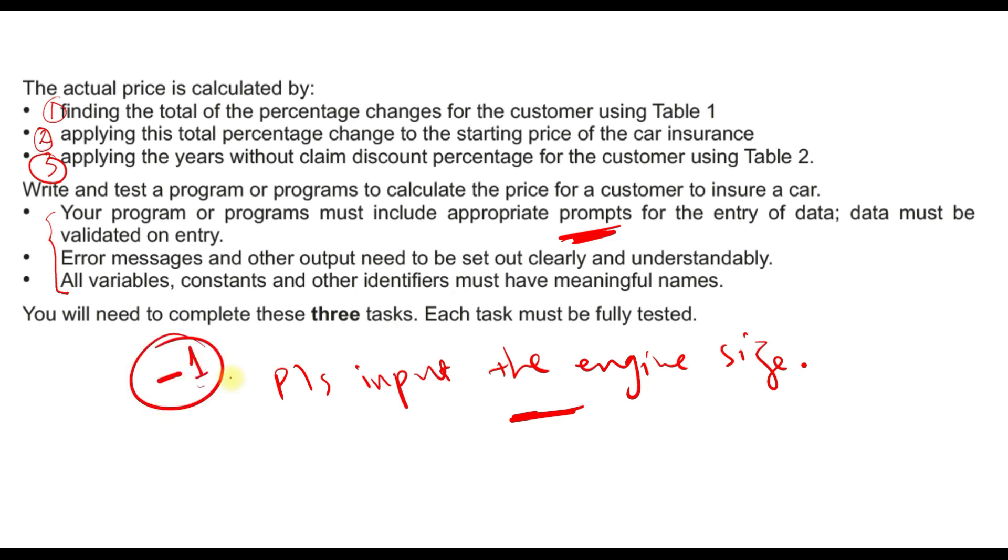If you didn't show this in your solution, definitely you will be deducted, for example one mark. Also, data must be validated on entry. Let's say the values are between 0 and 10. If the user inputs -1 or inputs 11, more than 10 or less than 0, this value should be rejected. Your program should also include error messages and other output that needs to be set out clearly and understandably. Everyone should be able to understand this by showing an error message. For example, if the user inputs -1, you should show that this value is not accepted.